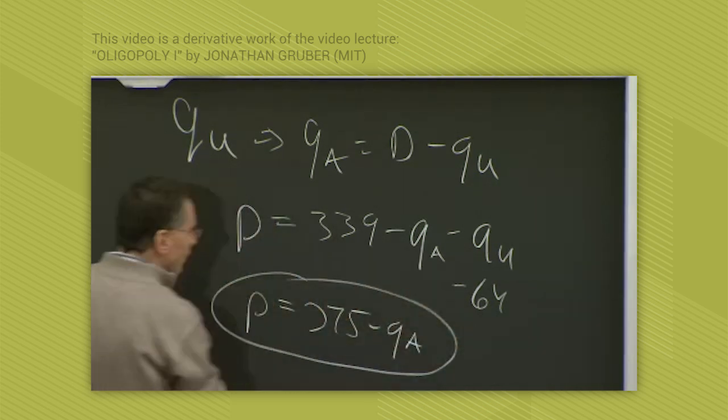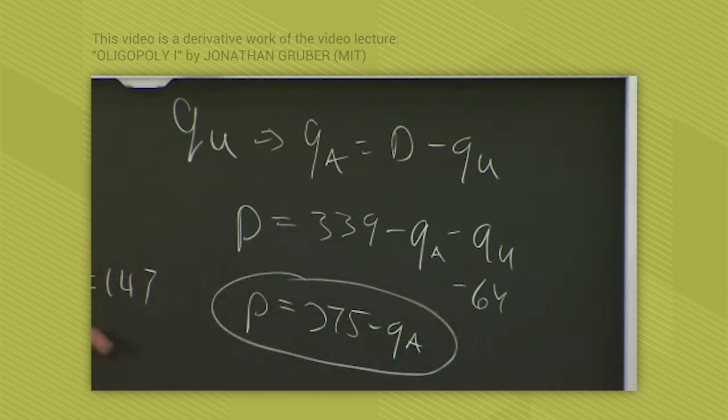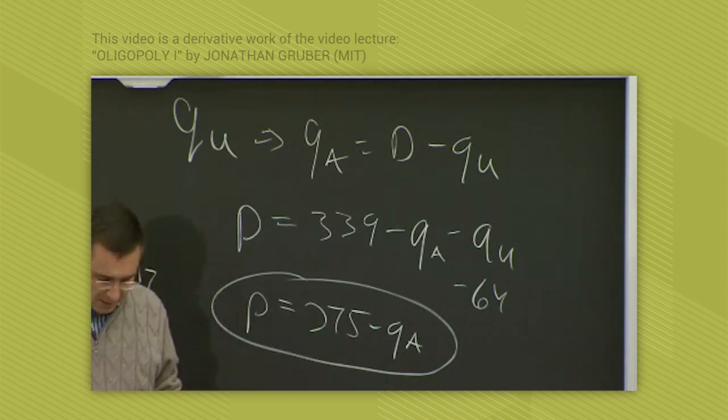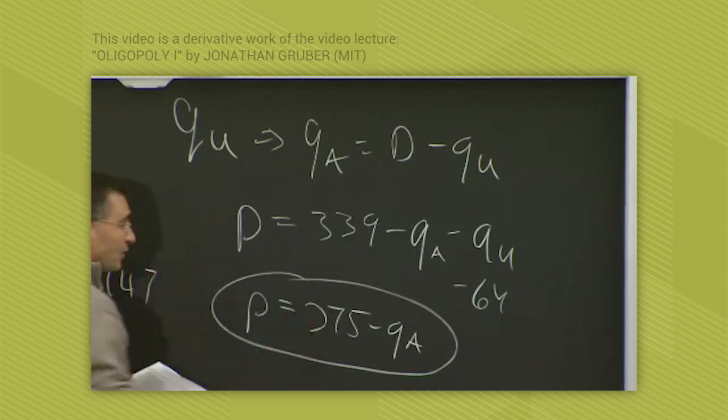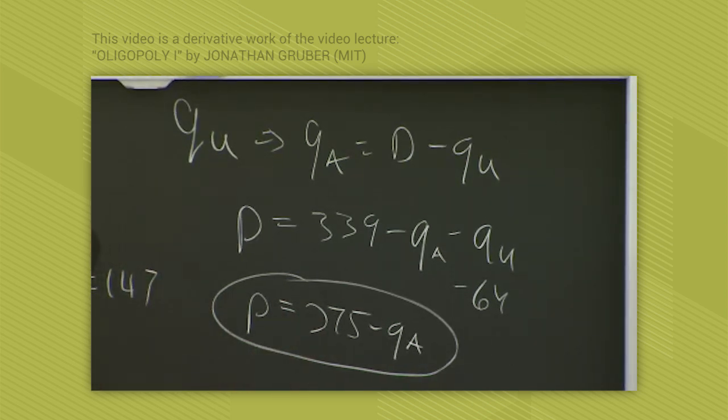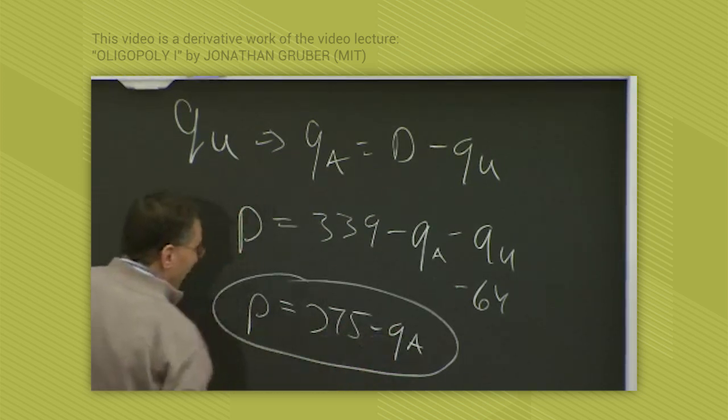So my new residual demand is P equals 275 minus Q sub A. That's my new residual demand because I thought United is going to sell 64,000. So instead of my demand being 339 minus Q, now it's 275 minus Q sub A. That's what's left. So if I use this as my new demand function and re-solve, then if this is my new demand function, my marginal revenues are then 275 minus 2Q A.